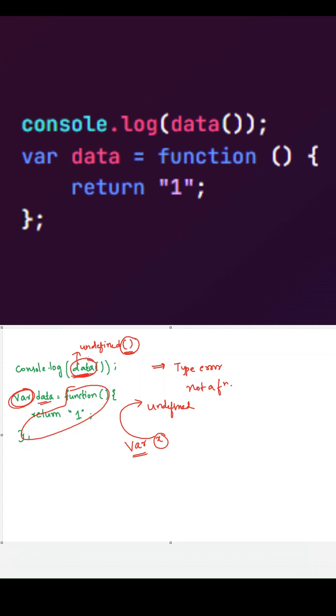We can use this only with the function. But data is not a function. So it will return a type error that data is not a function.